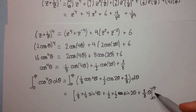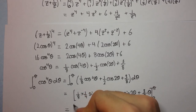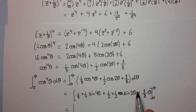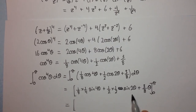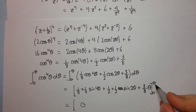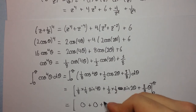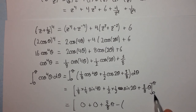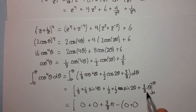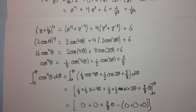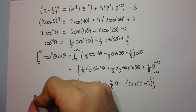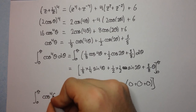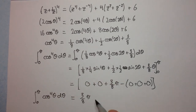Substituting the upper limit π: sin(4π) and sin(2π) are both 0 since sin of any integer multiple of π is 0. So those terms vanish, leaving 3π/8. Substituting the lower limit 0: sin(0) = 0 for both sine terms, and (3/8)·0 = 0. Therefore the integral from 0 to π of cos^4θ dθ equals 3π/8.